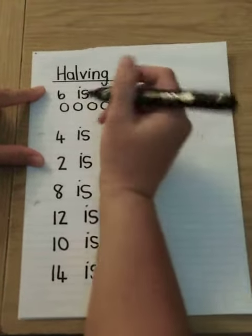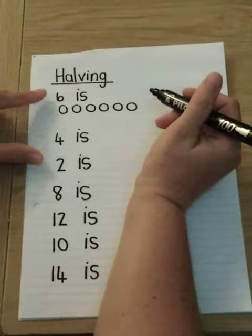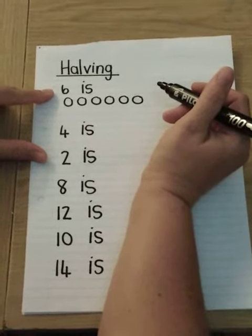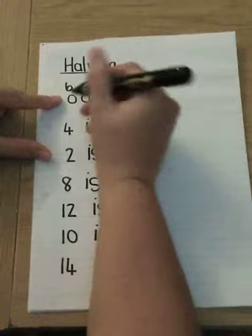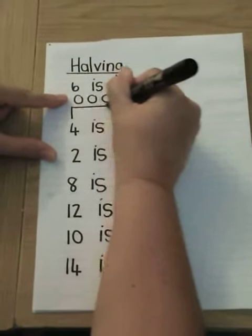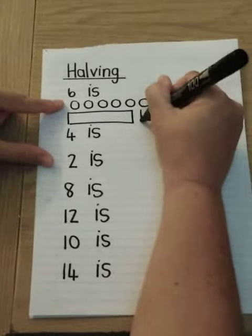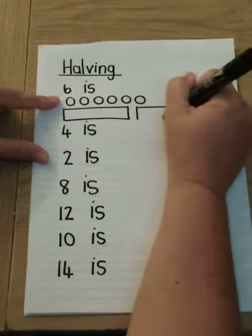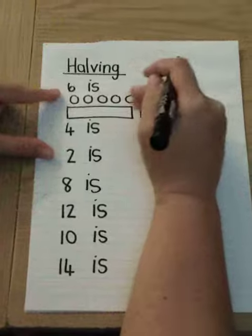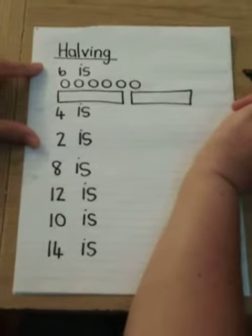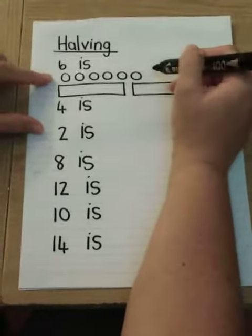So halving just means I need two spaces to put my circles into, and I need to make sure that they're big enough for my circles. And they need to be two because I'm cutting them down the middle, so there needs to be two parts. Okay, so I've got my six.